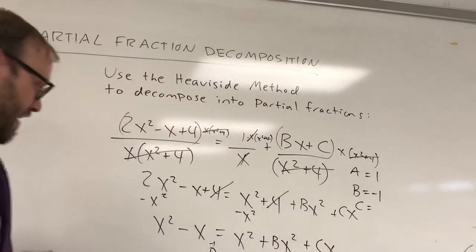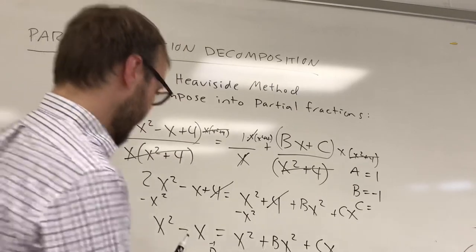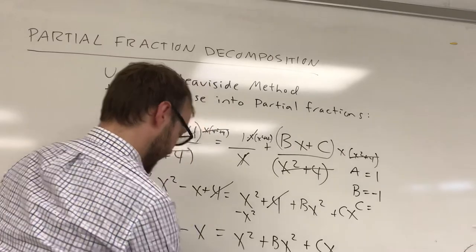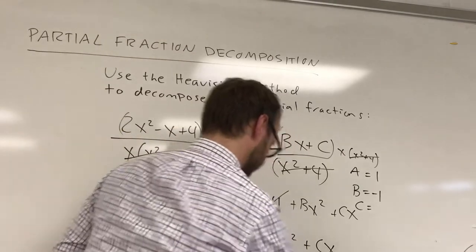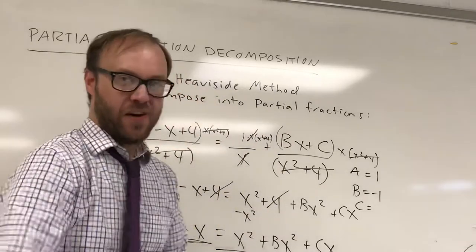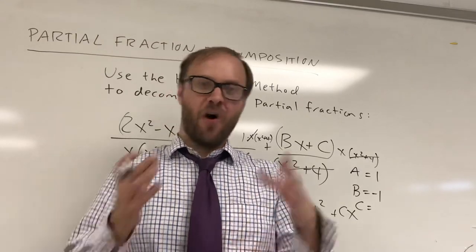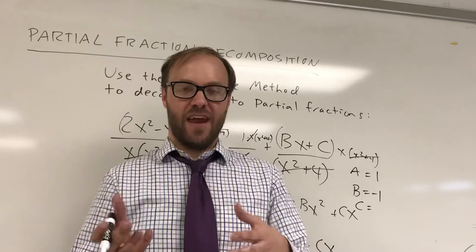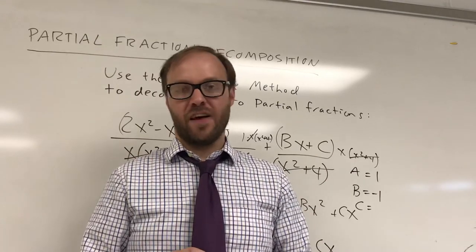And then I can also use that same kind of approach to find c. Notice here that I have negative 1x equals cx. So negative 1 is going to be equal to c. So sometimes you can use the Heaviside method to find part of your variable values and sometimes just the fact that that knocks a variable out is going to enable you to figure everything else out from there.